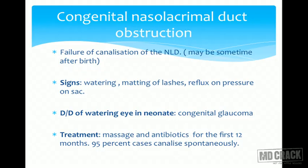Congenital nasolacrimal duct obstruction is a failure of canalization of the NLD, which can be present at birth. Signs are watering, matting of lashes, and reflux on pressure on the sac. Importantly, in any watering eye in a newborn, congenital glaucoma must be ruled out — suggested by increased corneal diameter and reduced corneal clarity. If suspected, examination under anesthesia is mandatory; in congenital glaucoma you will not get regurgitation on pressure on the sac.